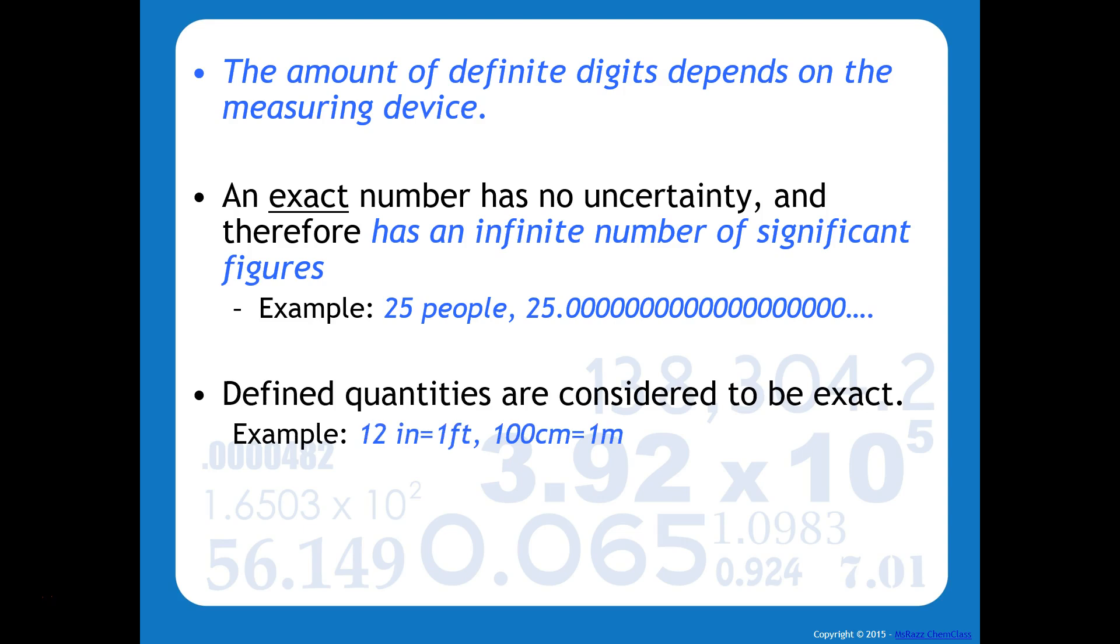Defined quantities are considered to also be exact. So 12 inches equals a foot, 100 centimeters equals 1 meter. Those are both examples of exact quantities. And when you perform calculations with these, you are never going to let that dictate how many significant figures are in your answer.